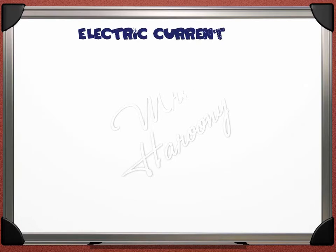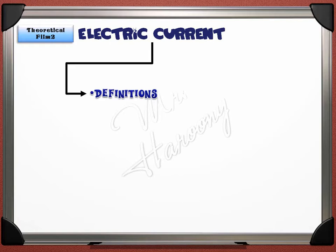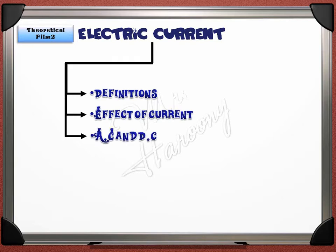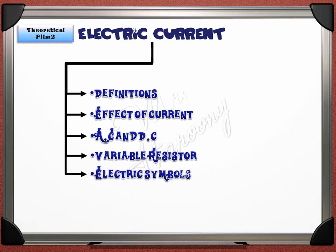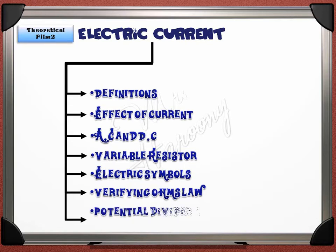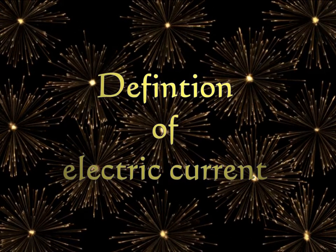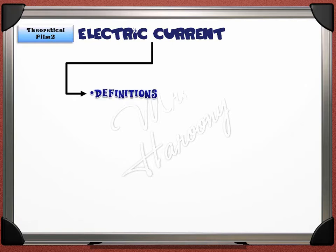This is the second part of the electric current and electric circuits lesson. It contains all the theoretical parts away from the rules and mathematical equations. We will give the definition of electric current, what electric current can do, two types of electric current AC and DC, the variable resistor, some electric symbols, how to practically prove Ohm's law V equals IR, and finally the special connection called the potentiometer.